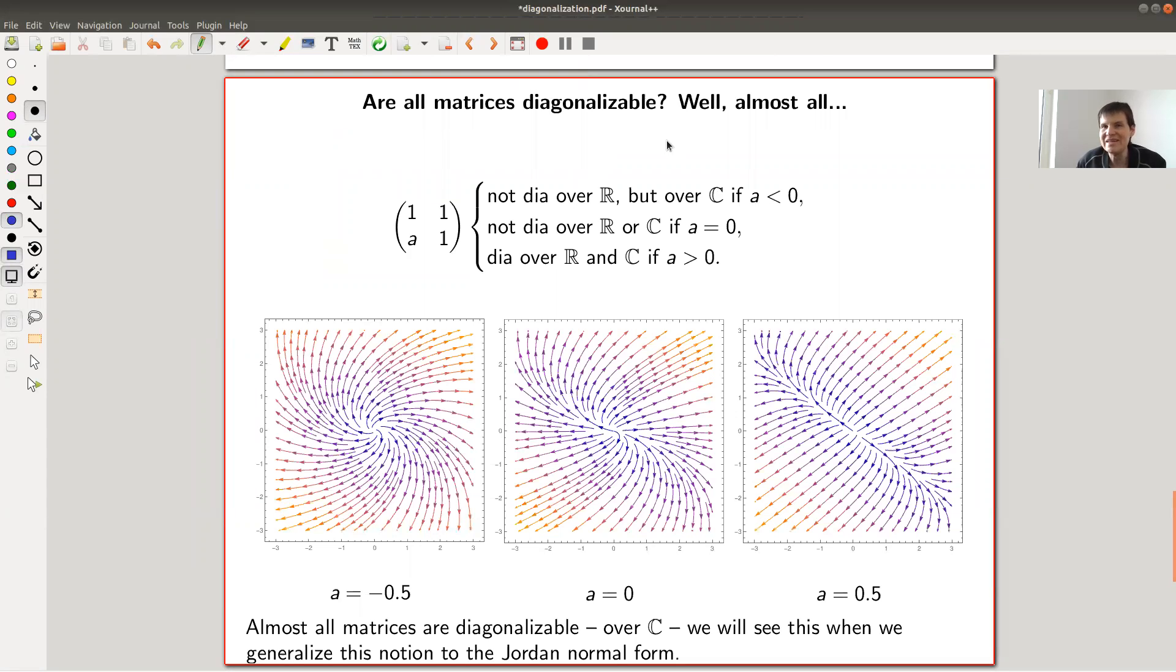Well, the answer is yes and no at the same time. Basically, all matrices are diagonalizable. Let's say if you work on one algebraically closed field like C, you're very happy, and almost all matrices are diagonalizable. For example, this matrix, which again depends on A, is only not diagonalizable if A happens to be zero. If you choose random A, it's basically never zero, so it's almost diagonalizable.